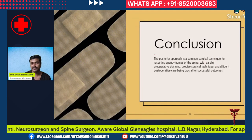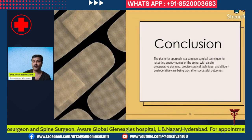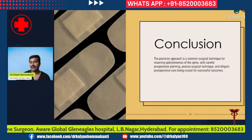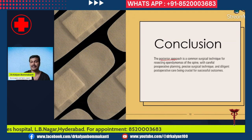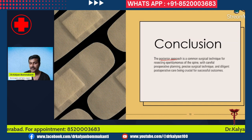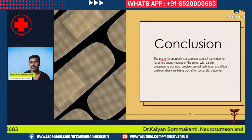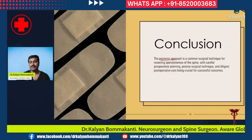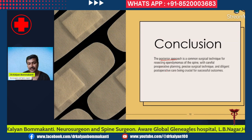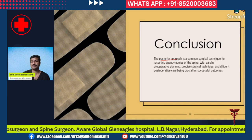In conclusion, among all approaches for spinal cord ependymoma, the posterior approach is the most common surgical technique. With careful preoperative planning, precise surgical technique, and diligent postoperative care, very good outcomes can be achieved — success rates of more than 70 to 80 percent, and in smaller cases even 90 percent success rate can be achieved.